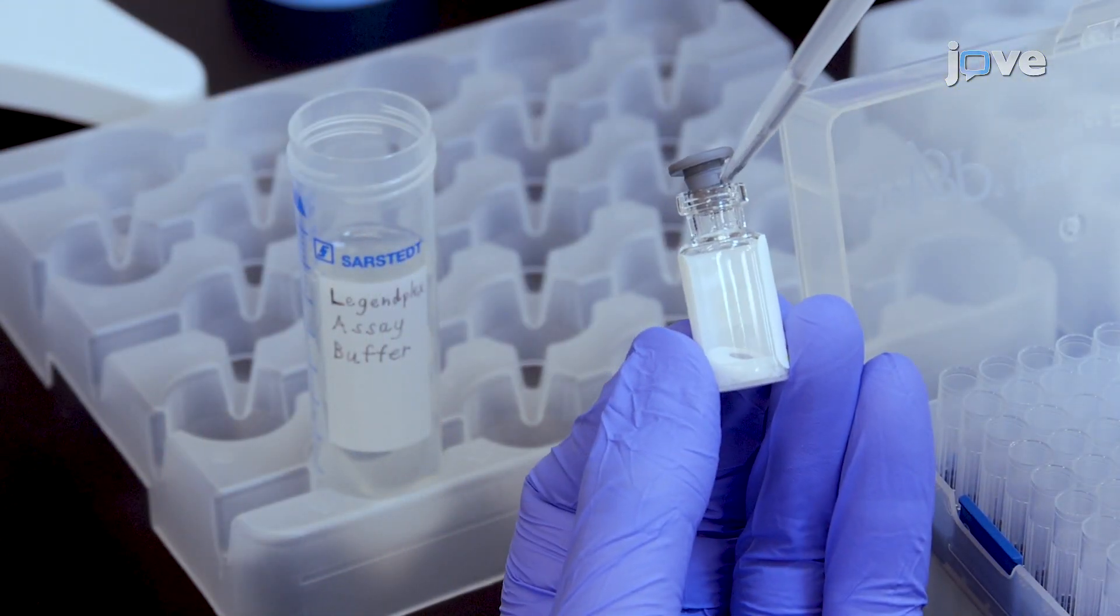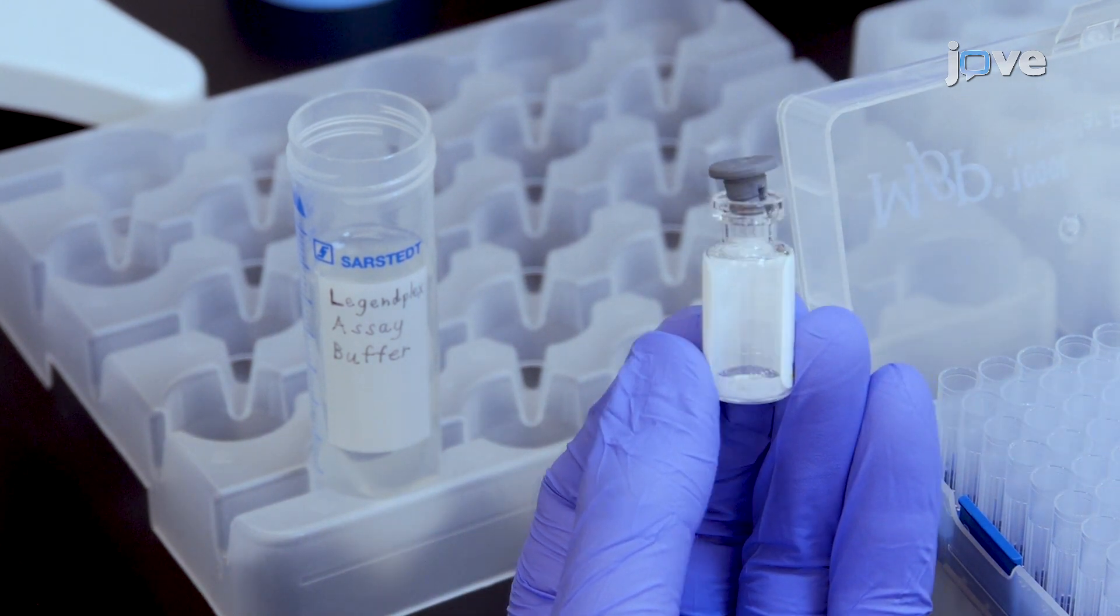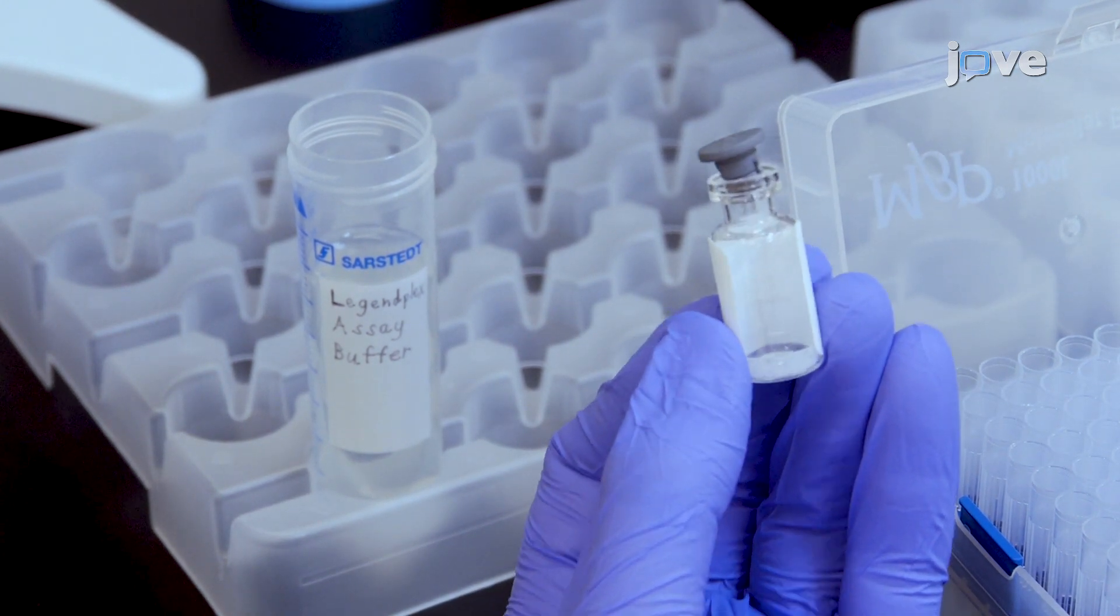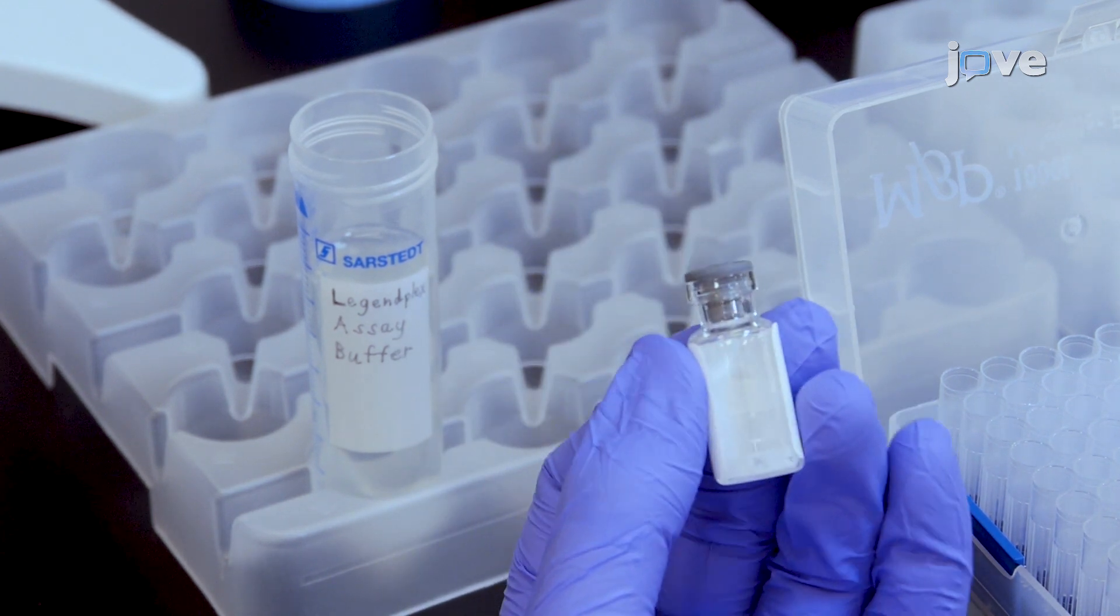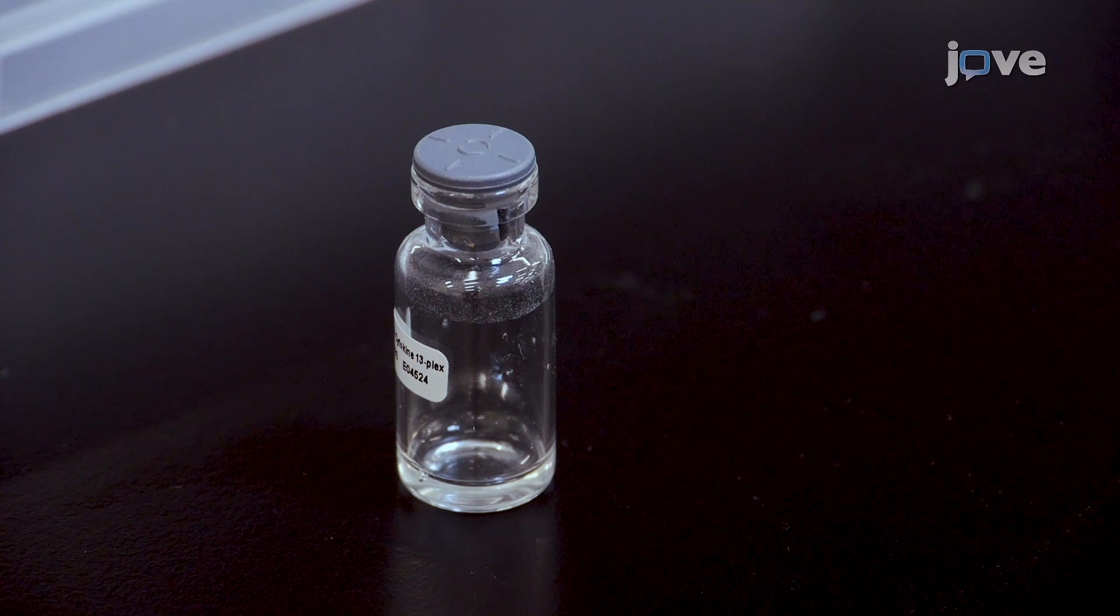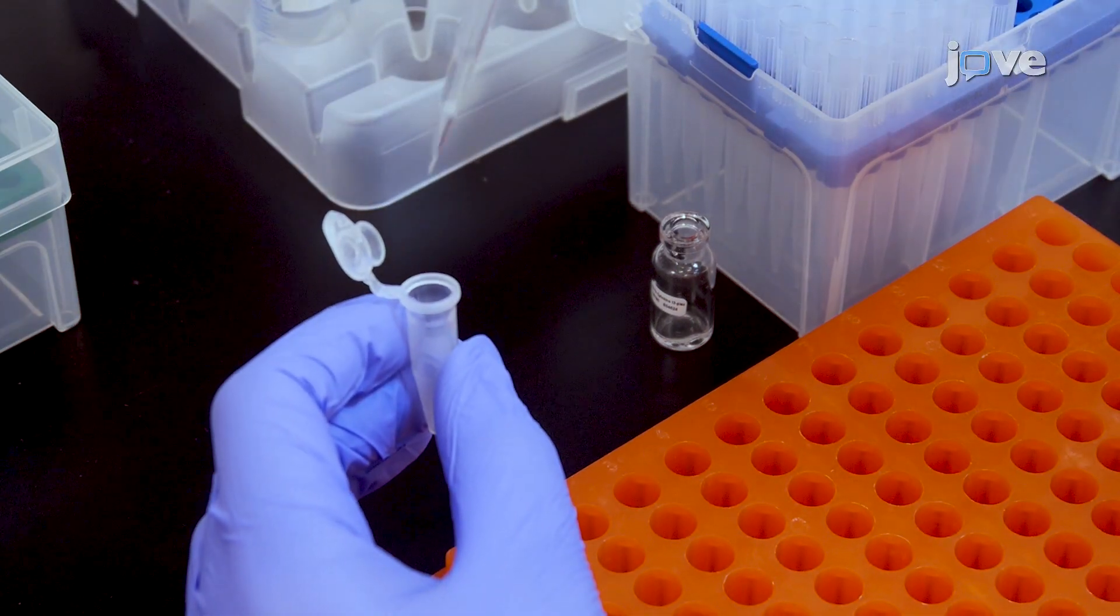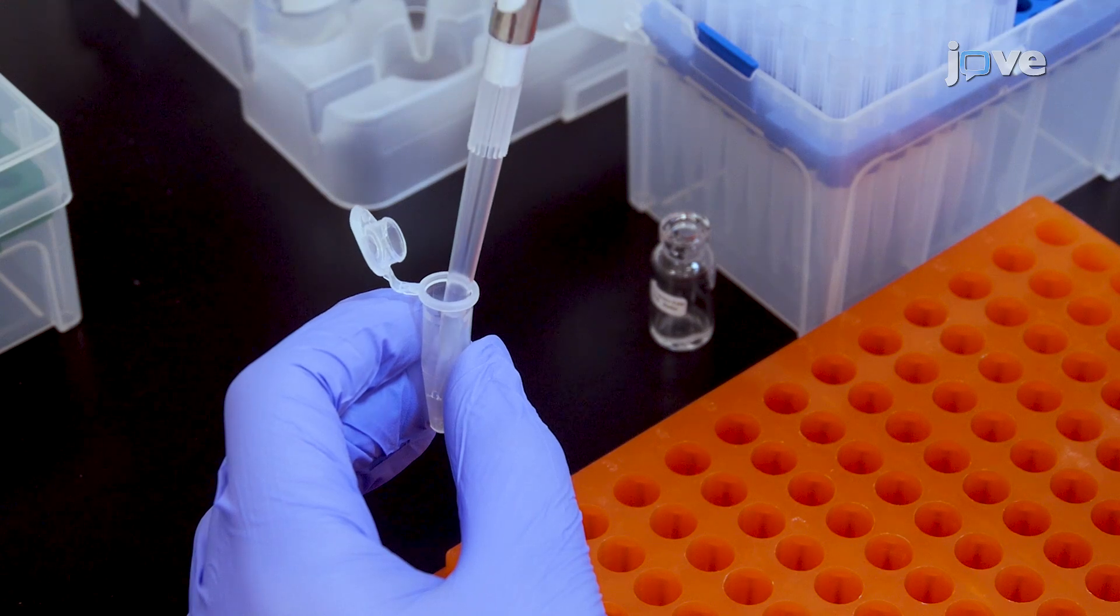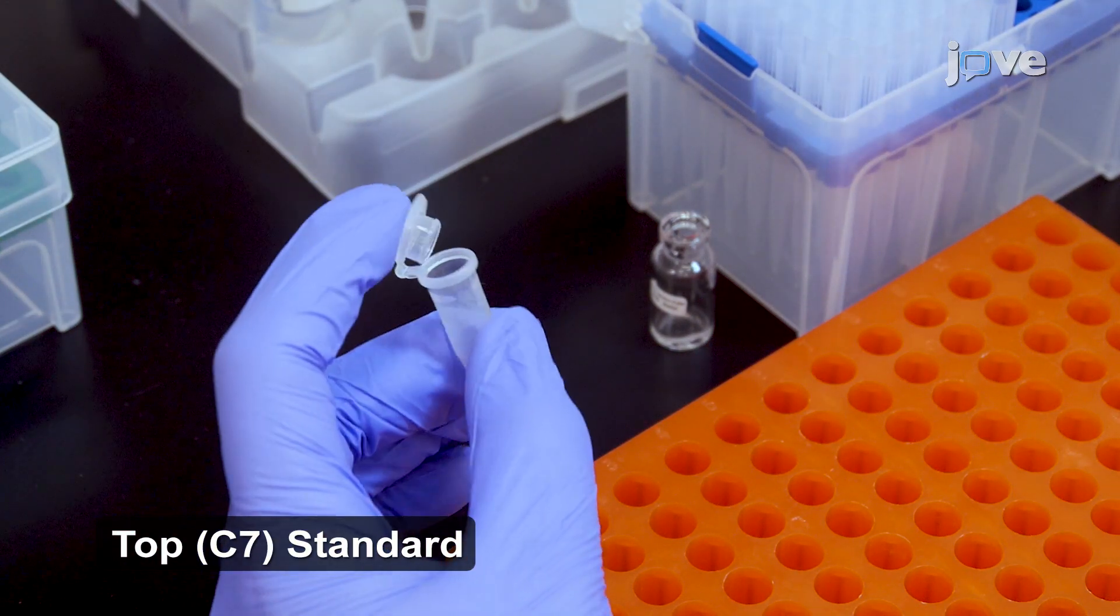For standard preparation, add 250 microliters of assay buffer to reconstitute the lyophilized mouse TH cytokine standard cocktail. Mix by briefly vortexing and allow the vial to sit at room temperature for 10 minutes. Transfer the standard cocktail to a polypropylene microcentrifuge tube labeled C7. This will be used as the top standard.